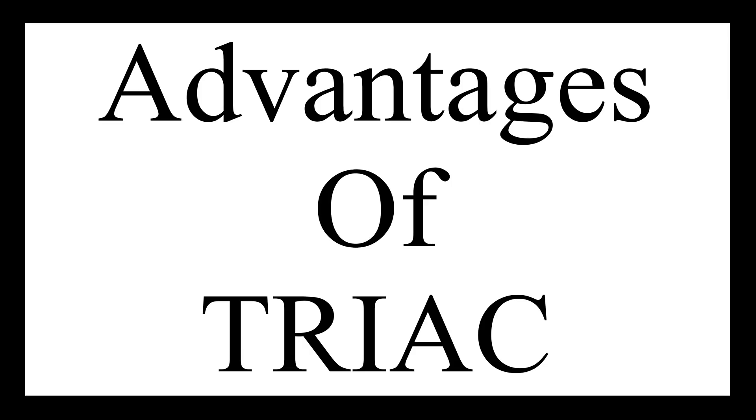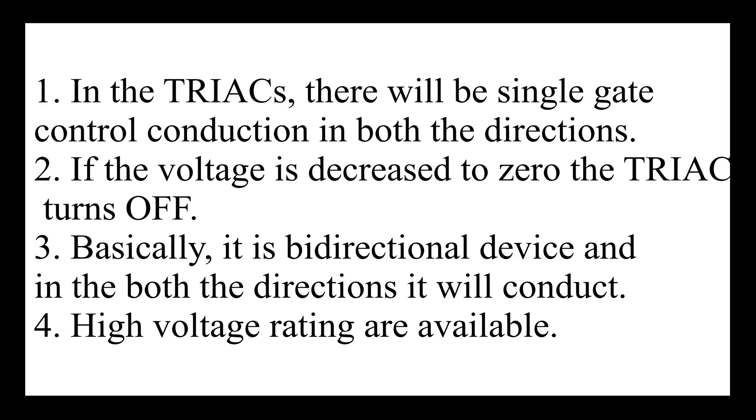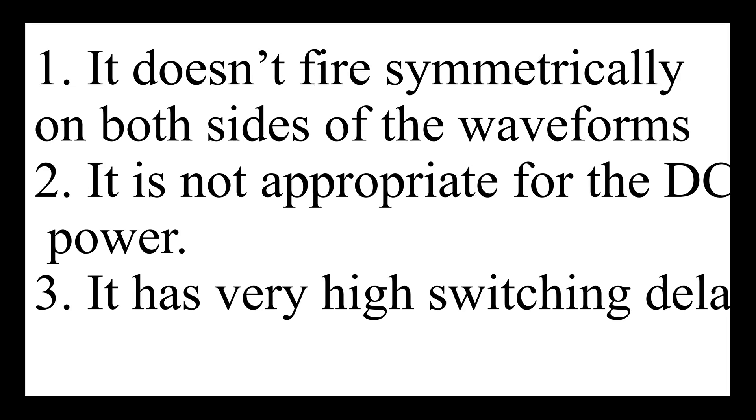Advantages of TRIAC: TRIACs have single gate control, conduction in both directions, if the voltage is decreased to zero the TRIAC turns off, it is basically a bi-directional device, and high voltage ratings are available. Disadvantages: it doesn't fire symmetrically on both sides of the waveform and is not appropriate for DC power.